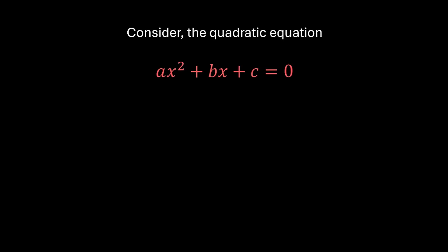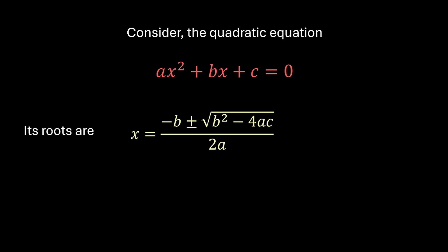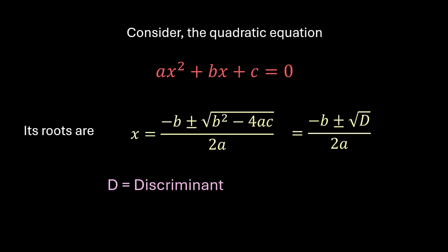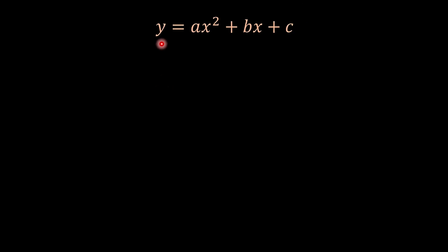Now let's try to understand the need to develop imaginary numbers. Consider the quadratic equation ax² + bx + c = 0, where a, b, c are constants and a ≠ 0. Its roots are x = (−b ± √(b² − 4ac)) / 2a. Here d is the discriminant. This is the quadratic equation y = ax² + bx + c.